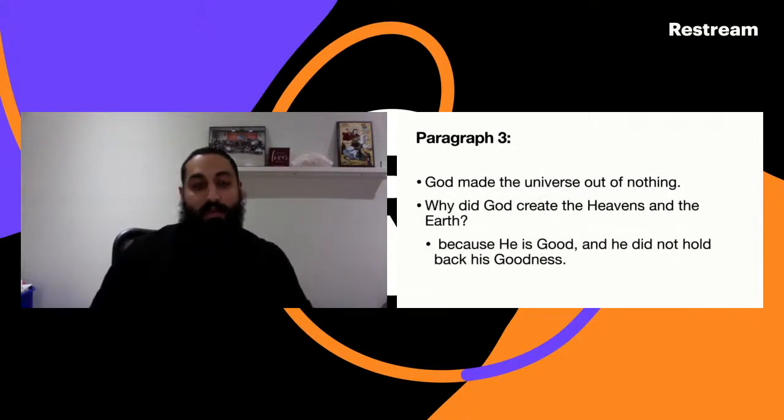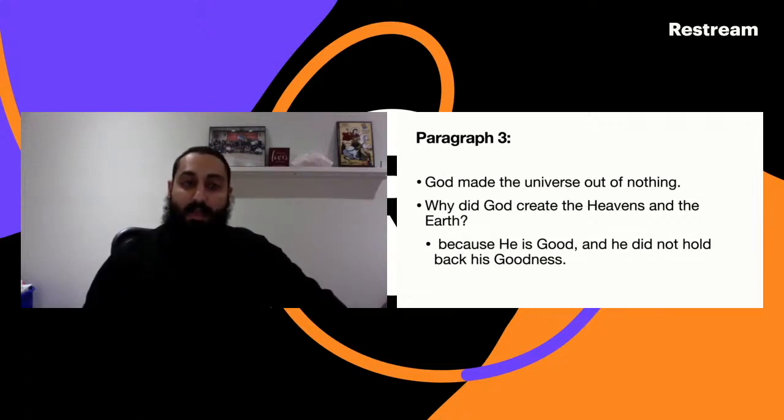God by definition, by our basic understanding, cannot have any limitation because any limitation would make Him not God in the first place. So from paragraph three we move on from the premise that God made the universe out of nothing. He comes back and asks, why did God make the universe? Why did God create the heavens and the earth? He says because He is good and He did not hold back His goodness.